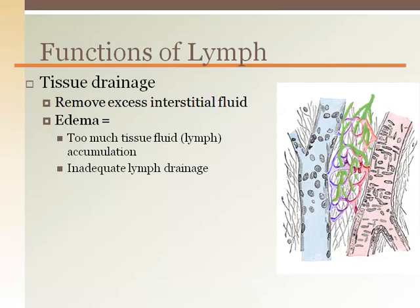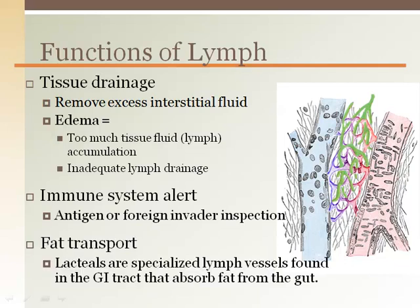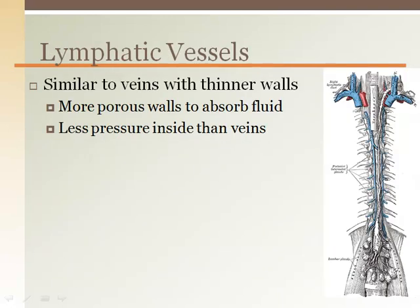Lymphatic fluid goes through a number of lymph nodes for the immune system cells to inspect and identify antigens. Specialized lymphatic structures in the villi of the small intestine called lacteals are used to transport fat that has been absorbed. Lymphatic vessels have a structure similar to thin-walled veins because they have such low pressures, which are ideal for drainage. The lymphatic vessels are more delicate than veins and also contain valves to prevent backflow.